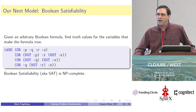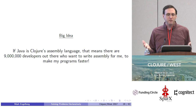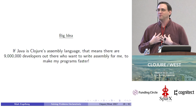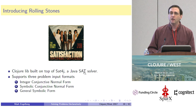I wanted to build something like this in Clojure, but I didn't want to have to duplicate all that effort. That gave me another big insight: if Java is Clojure's assembly language, that means there are nine million developers out there who want to write my assembly code for me just to make my programs faster. So I've started to think of Java programmers as a great resource to use — and of course what I'm talking about is that Clojure has great interop with Java, and we should be taking advantage of that.